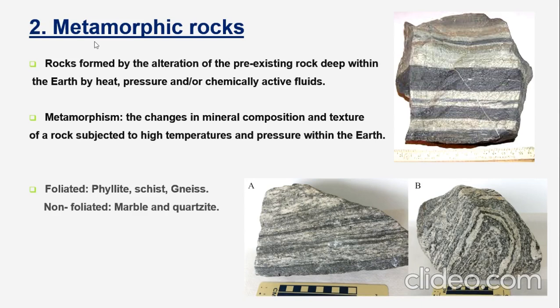Metamorphic rocks are formed by the alteration of pre-existing rocks deep within the earth by heat, pressure, and sometimes chemically active fluids. The process through which metamorphic rocks form is called metamorphism — the change in mineral composition and texture of a rock subjected to high temperature and pressure. An important feature observed in such rocks is foliation and banded structures, as shown in the adjacent figures. Examples include phyllite, schist, and gneiss. Non-foliated textures are also seen in rocks like marble and quartzite.